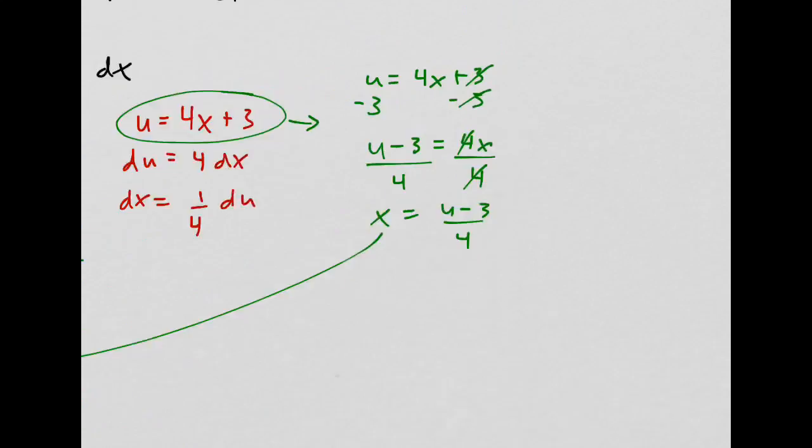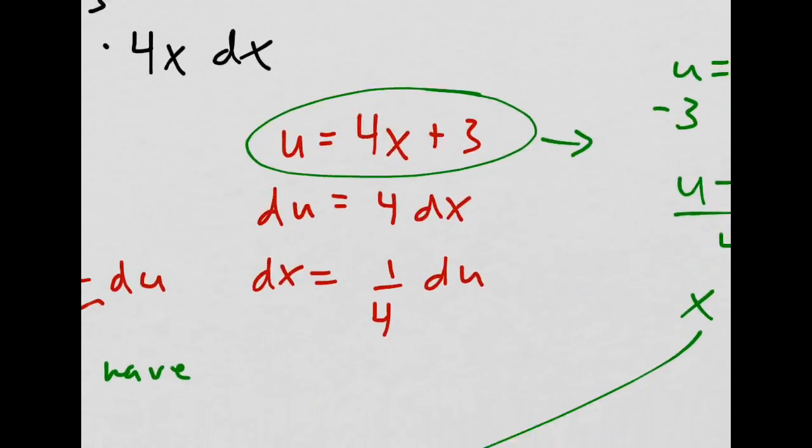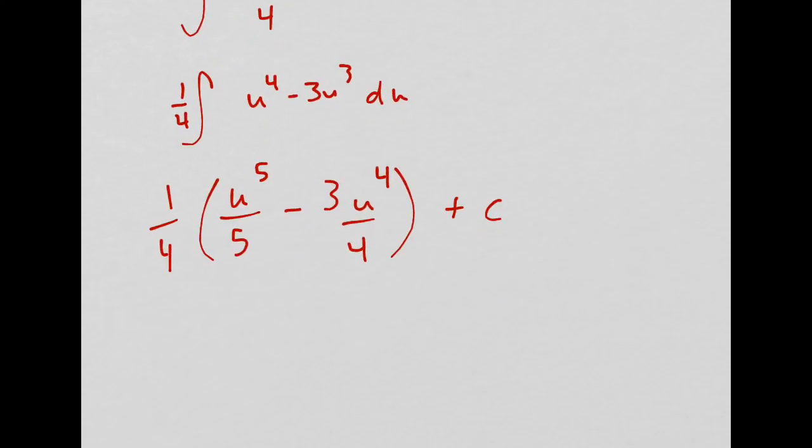Well, that was nice. Now I just substitute my u value back in, which is 4x plus 3. So this is 1 fourth times 4x plus 3 quantity to the fifth divided by 5. This is nasty.